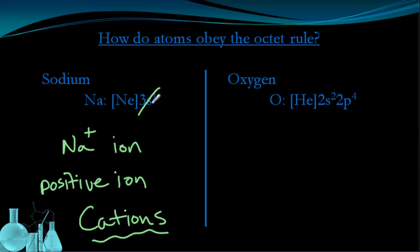In order for sodium to fulfill this octet rule, it needs to lose an electron, become a positive ion, and therefore it will have a 2s2, 2p6 valence configuration that neon has. Now let's look at oxygen.